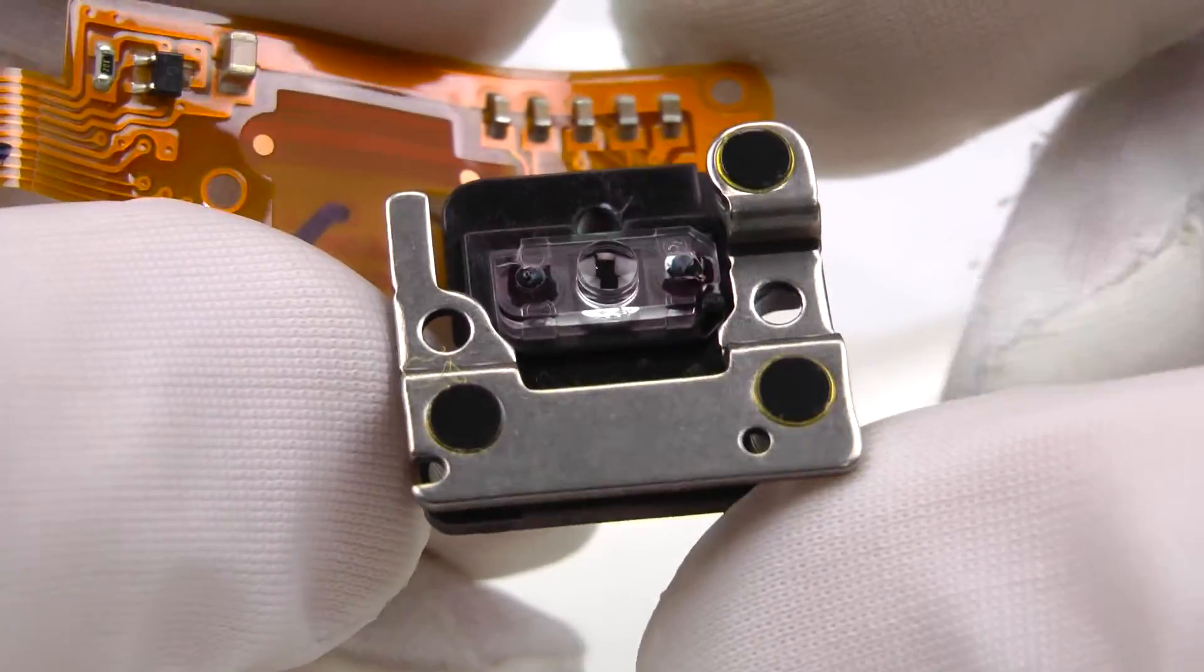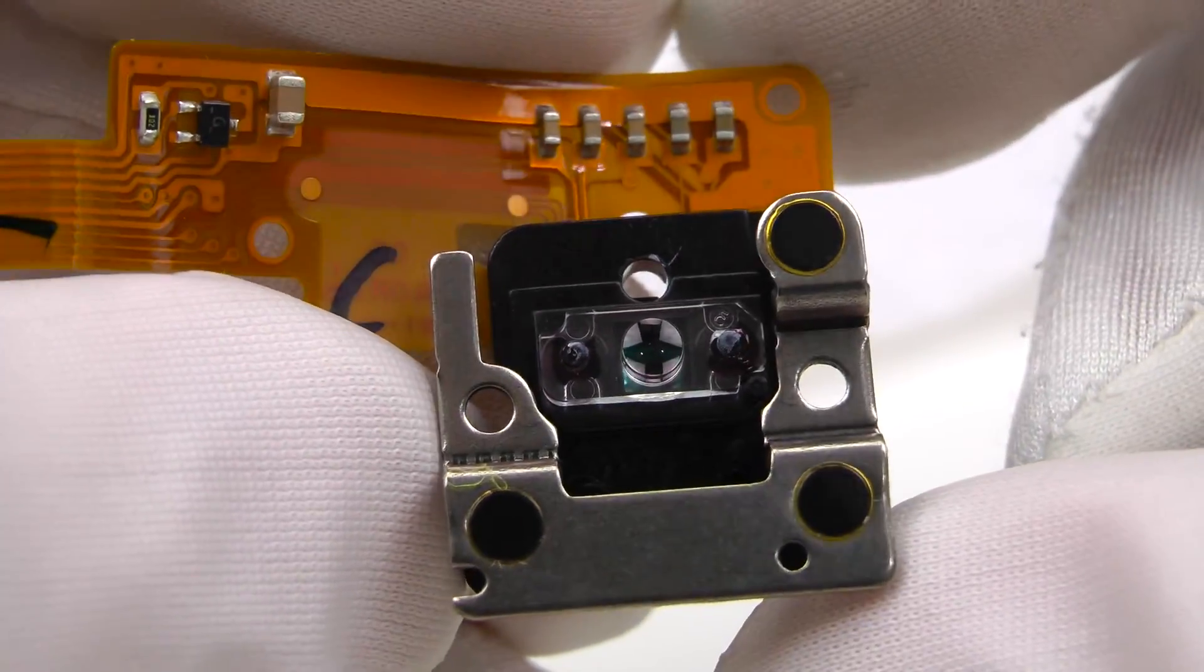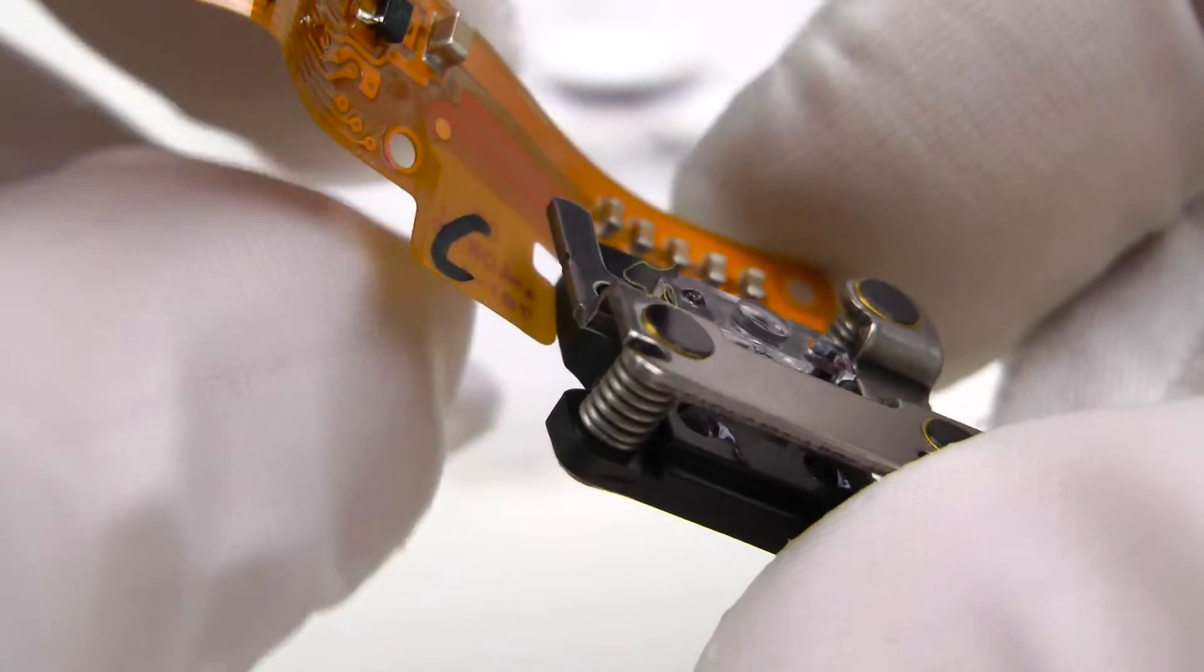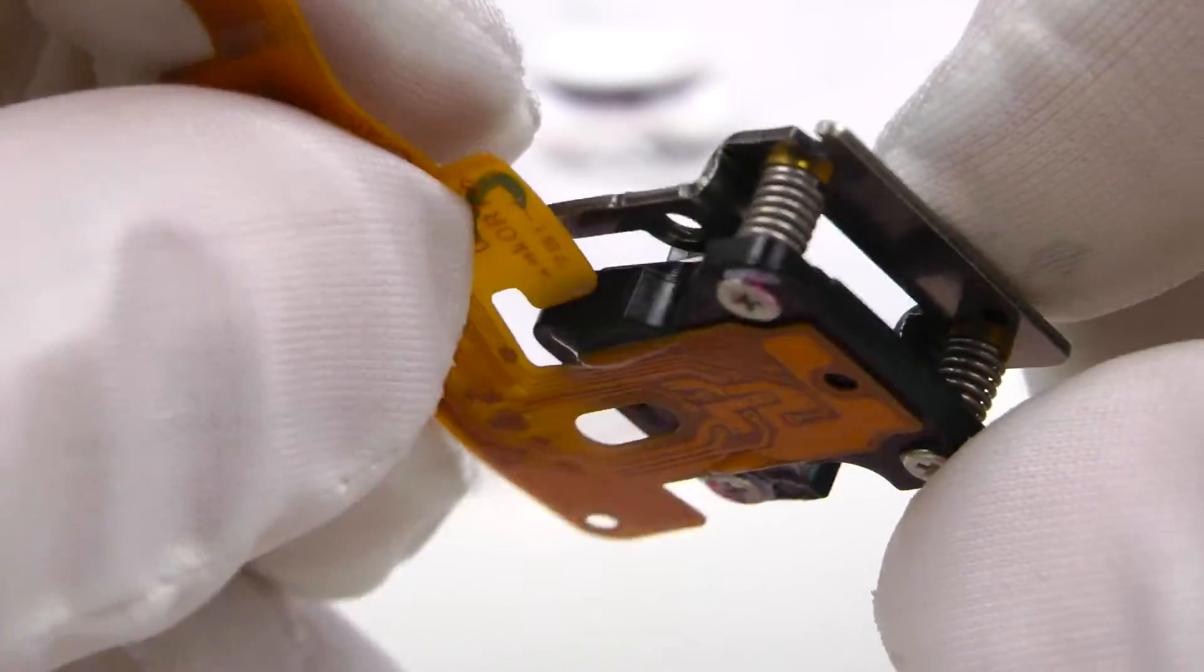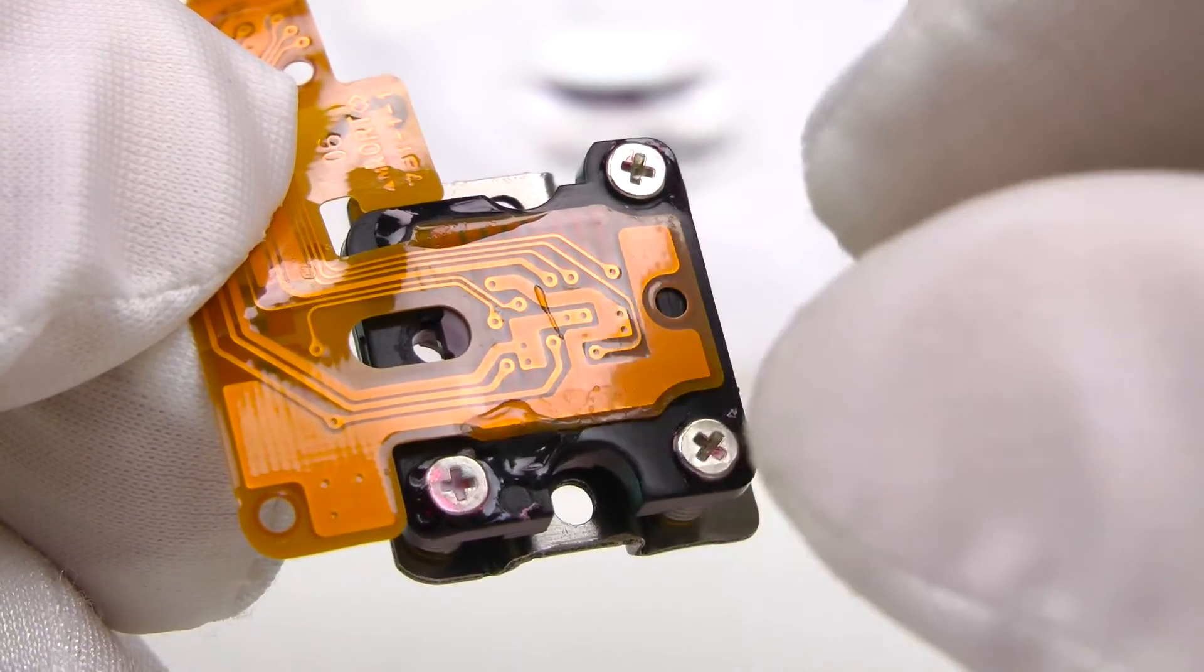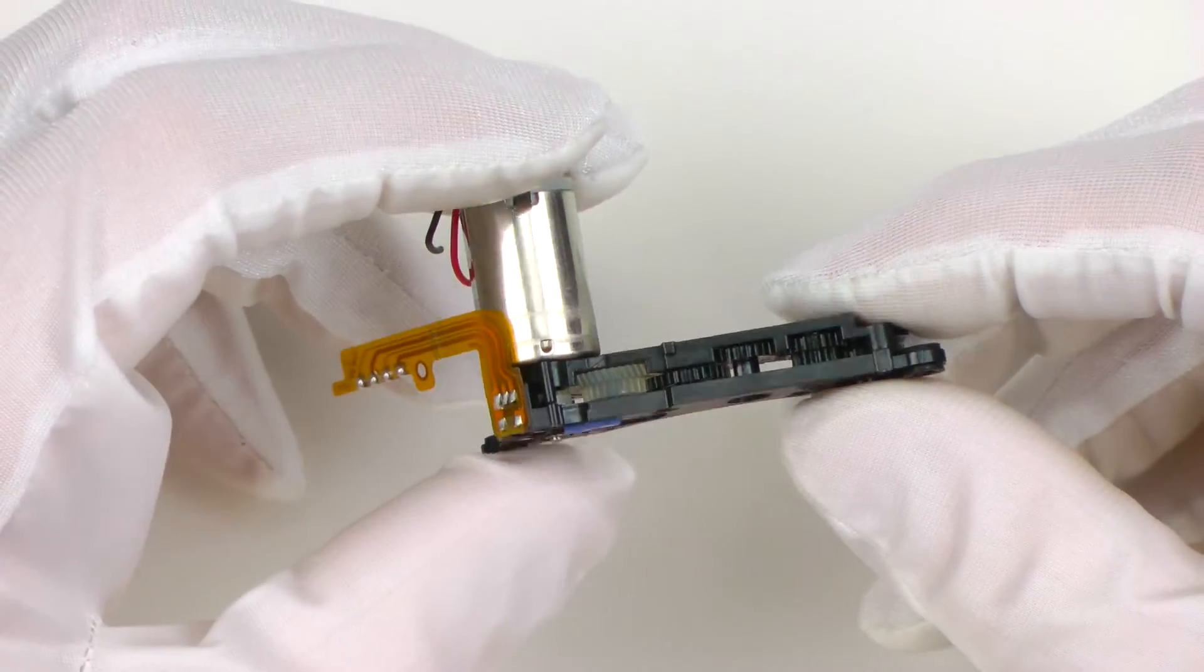Next is the light meter or auto exposure sensor. It's all glued together and there are three adjustment screws with springs that allow for correct position adjustment of this whole assembly.